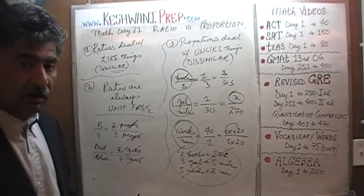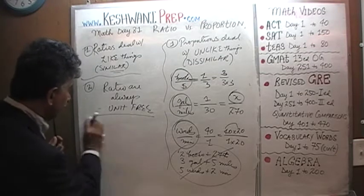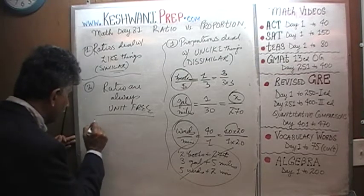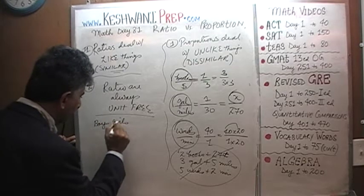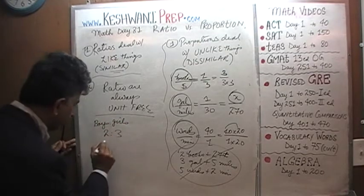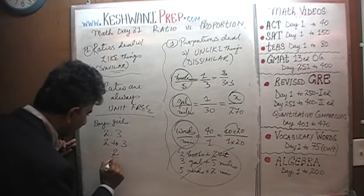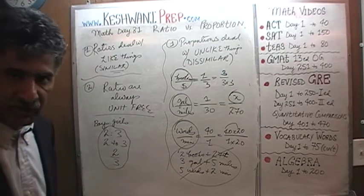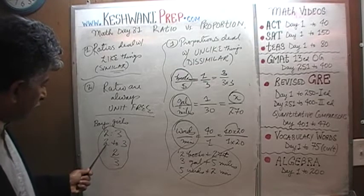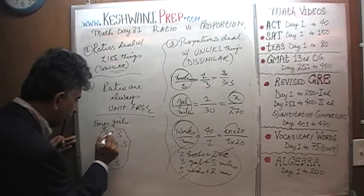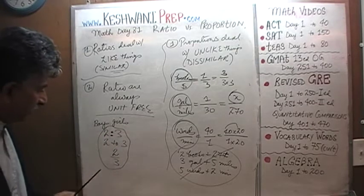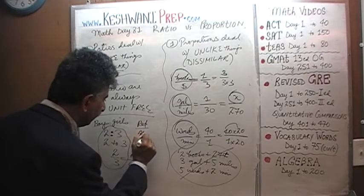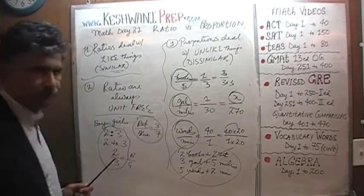By the way, ratios can be expressed in three different ways. We can talk about the ratio of boys to girls as two to three written out in words, or using a colon as 2:3, or written as a fraction. These are all perfectly acceptable ways of expressing a ratio. For example, ratio of boys to girls is 2 to 3; ratio of red cars to blue cars is 3 to 7.